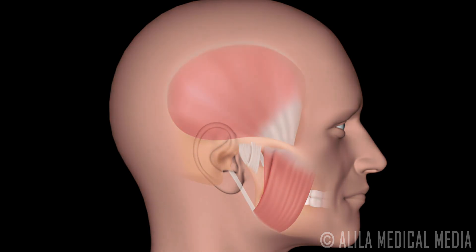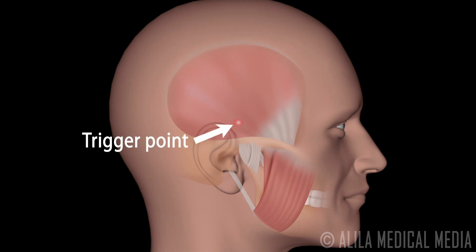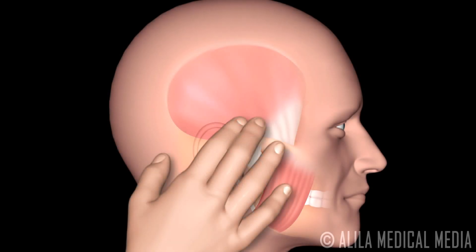The syndrome is characterized by presence of hyperirritable spots located in skeletal muscles called trigger points. A trigger point can be felt as a nodule of muscle with harder than normal consistency. Palpation of trigger points may elicit pain in a different location. This is called referred pain.